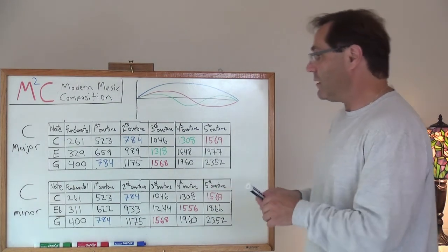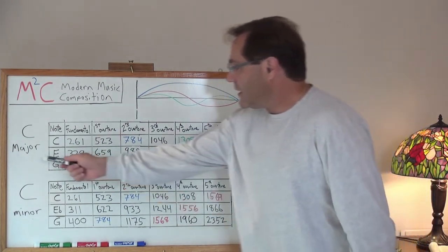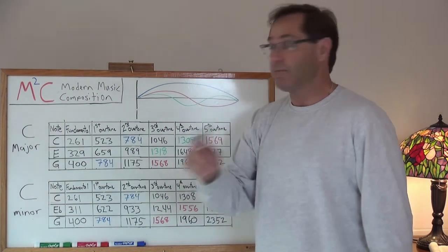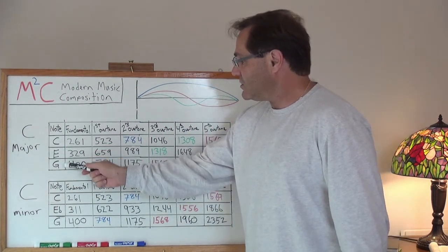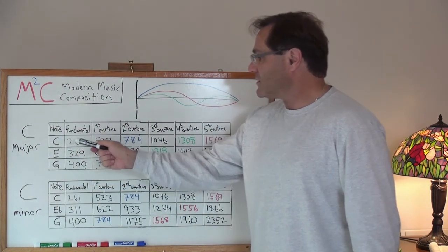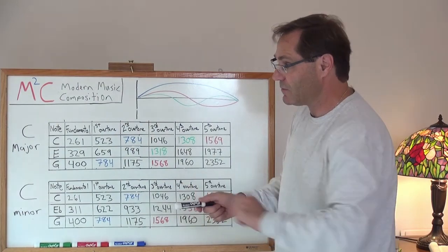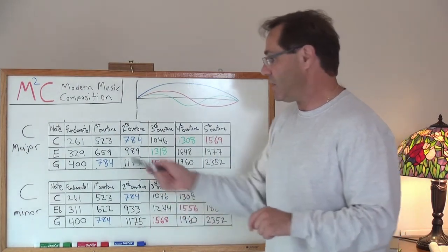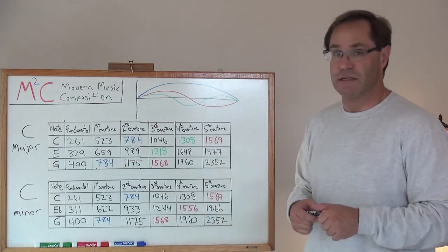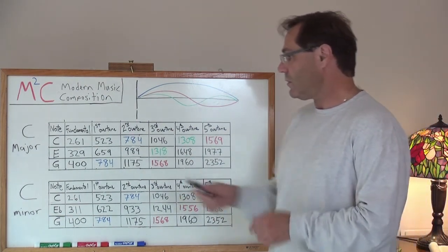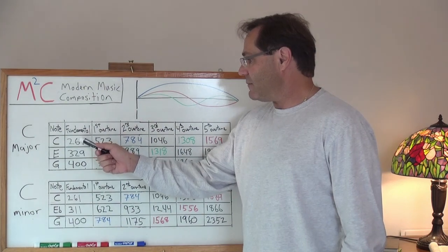Well, it turns out that in C major, which you have—we're talking about the triad here, C, E, and G—well, each one of those notes has a fundamental frequency. That is, when you hit, say, for example, middle C on a piano, you're going to be at a frequency of 261. All these numbers are in units of frequency.